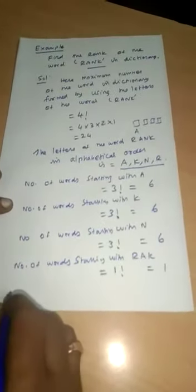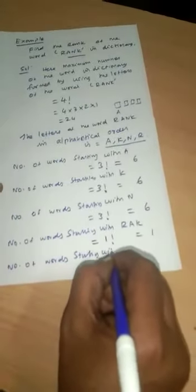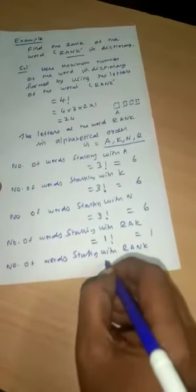Next, number of words starting with R, A, N, K — that is the word RANK itself. Starting with R, A, K, one letter remaining equals one word. Therefore, total number: six plus six plus six plus one equals nineteen. So the rank of the word RANK is the nineteenth place.